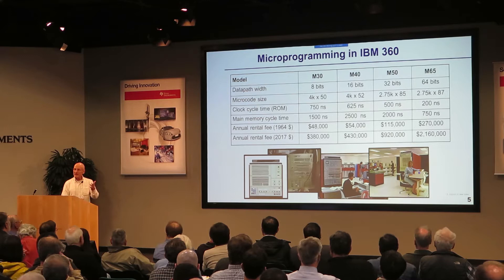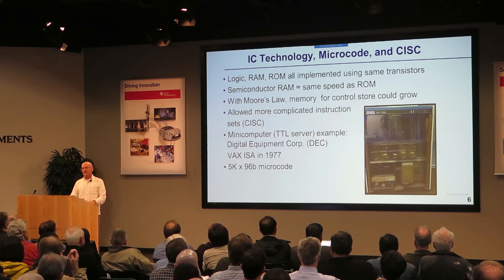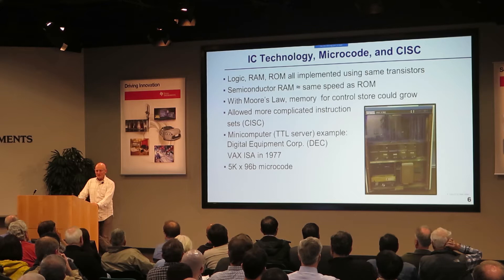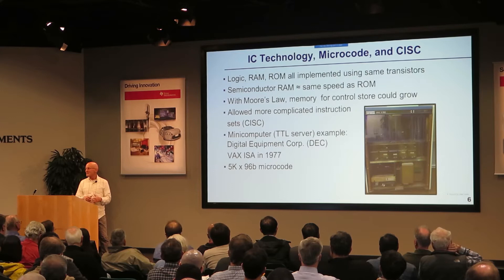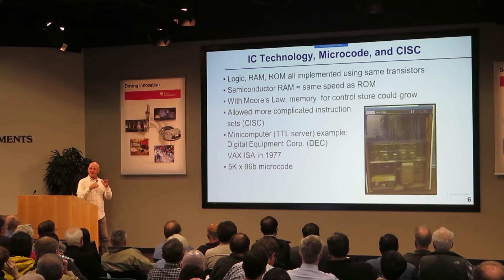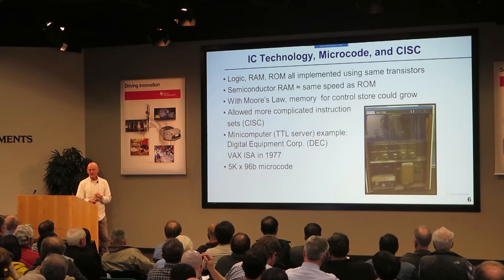Then comes integrated circuit technology that wasn't part of the mainframes. Now RAMs are about the same speed as ROMs, but Moore's Law is in full force so memory is going to get bigger, which allowed bigger more complicated microprograms, which allowed bigger more complicated instruction sets — what we call complex instruction set computers. The shining example of that is the VAX 11/780, which had 5,000 lines of 96-bit microcode. It was a lot more complicated than the 360, but a very successful product.